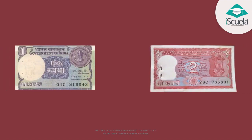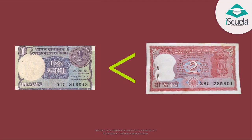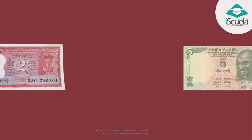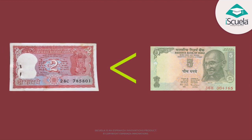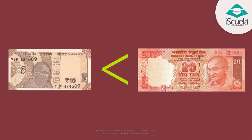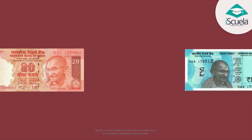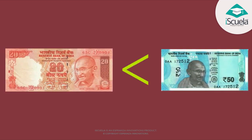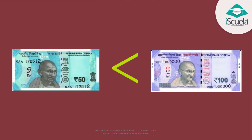Let us speak about more and less rupees. 2 rupees are more than 1. 5 are more than 2. 10 rupees are more than 5. 20 rupees are more than 10. 50 rupees are more than 20. 100 rupees are more than 50.